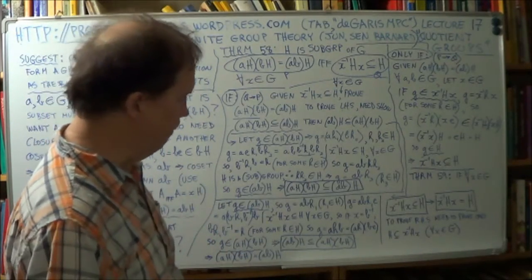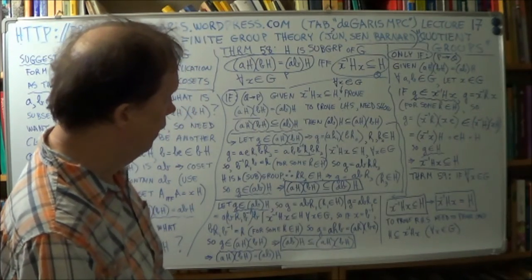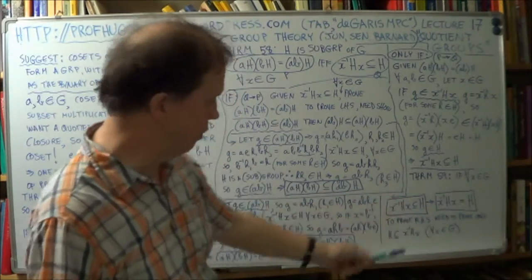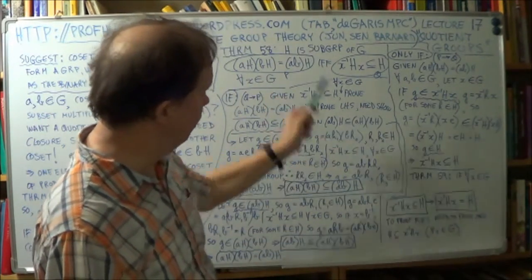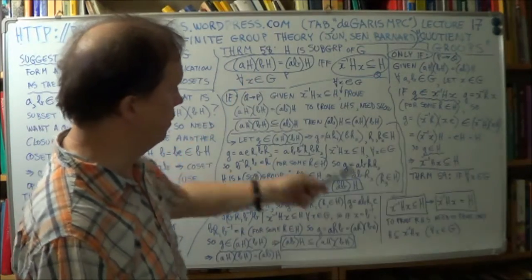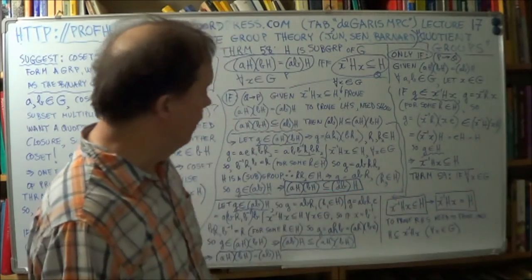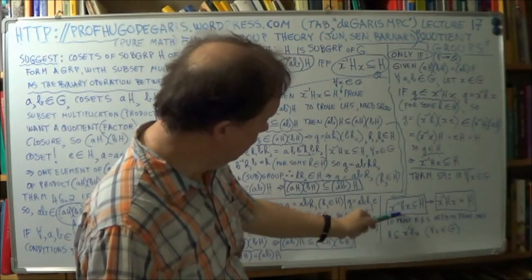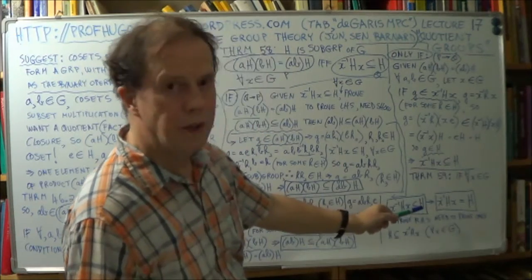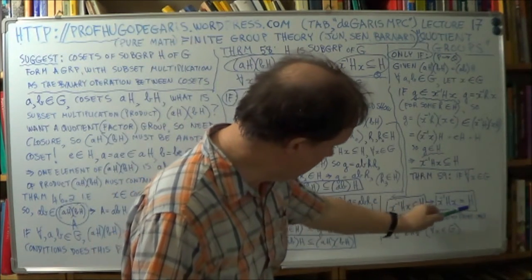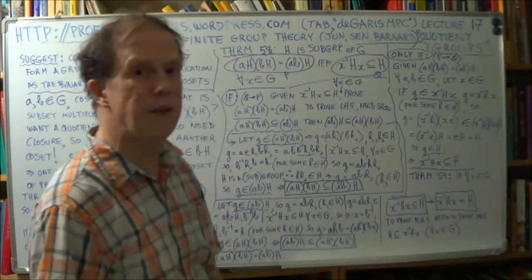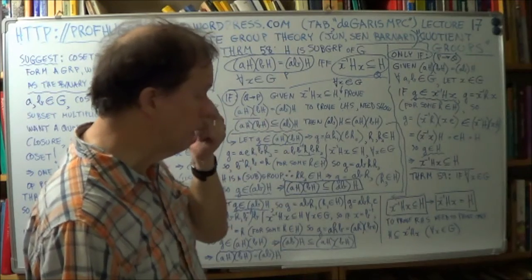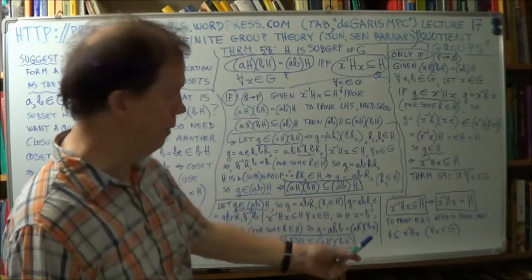Now, interestingly, if this is true, then I don't have enough board to prove it, but the next theorem follows on from 58, so theorem 59. If this is true, you can show fairly quickly that it's, this is not just a subset of that, they're actually equal. These two are actually equal. They're the same subgroup. So that will be for the next session, because, you know, run out of board.